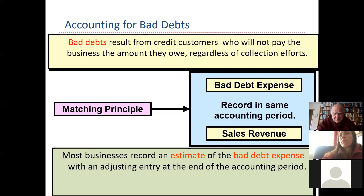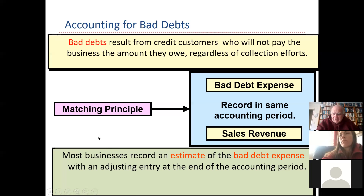These are just the way companies must handle this. At the end of every month, you have an adjusting journal entry to make. You must estimate the bad debt expense. You have to sit down at the end of the month and look at your receivables or sales and guess how many of those are going to be uncollectible and how much.